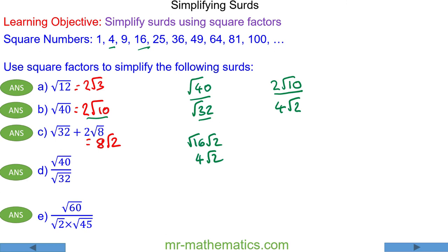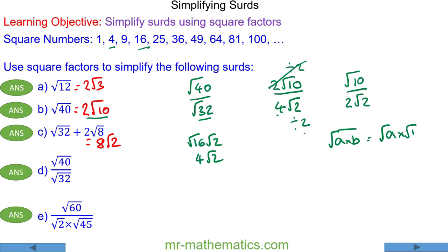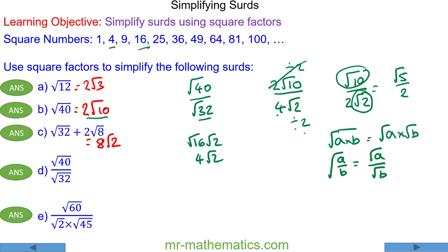We can simplify this fraction firstly by dividing both numerator and denominator by 2. And because √(a/b) can be written as √a divided by √b, we can do √10 divided by √2 to make √5. So we're left with √5 over 2.